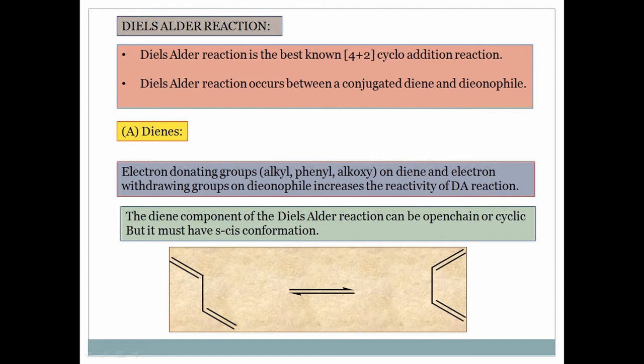The Diels-Alder reaction is a 4π+2π cycloaddition. It takes place between a conjugated diene and a dienophile. Conditions required: electron-donating groups on the diene and electron-withdrawing groups on the dienophile increase the reactivity of the Diels-Alder reaction.